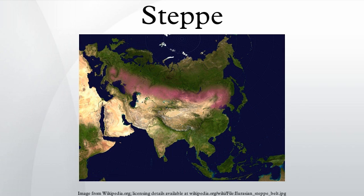Another large steppe area is located in the central United States and western Canada. The Short Grass Prairie Steppe is the westernmost part of the Great Plains region. The channeled scablands in southern British Columbia and Washington state is an example of a steppe region in North America outside of the Great Plains. In South America, Cold Steppe can be found in Patagonia and much of the high elevation regions east of the Southern Andes. Relatively small steppe areas can be found in the interior of the South Island of New Zealand.